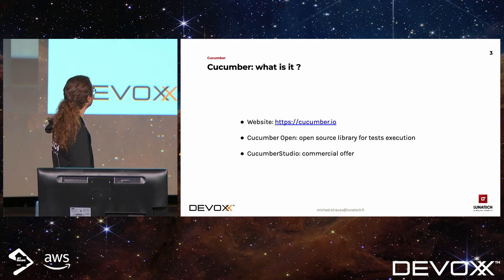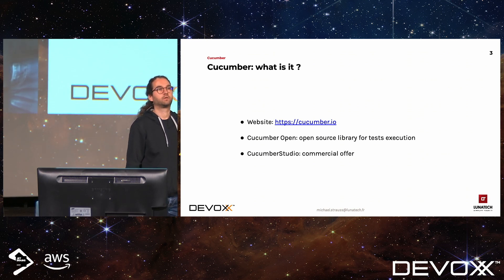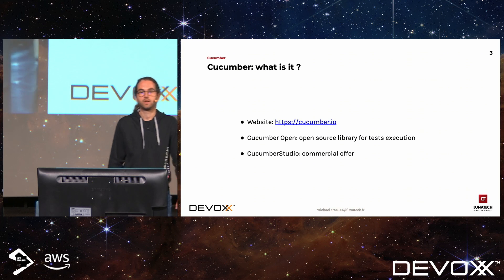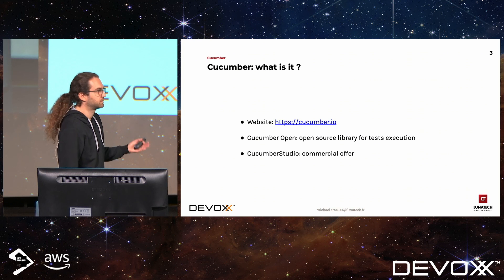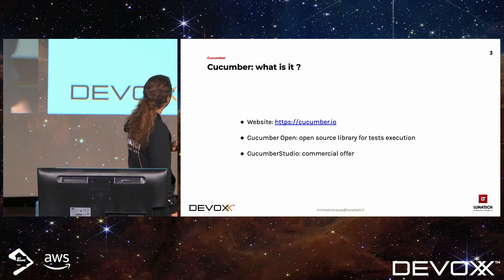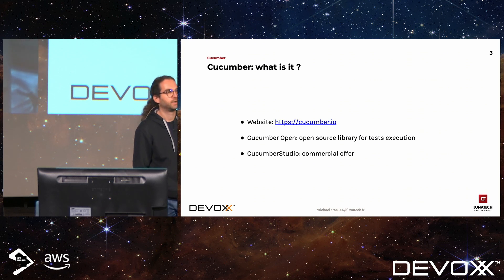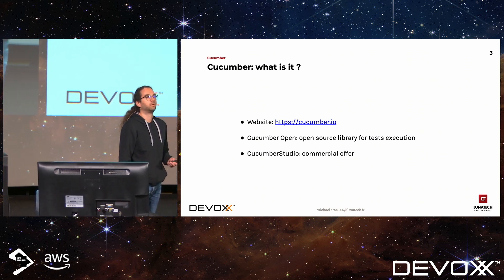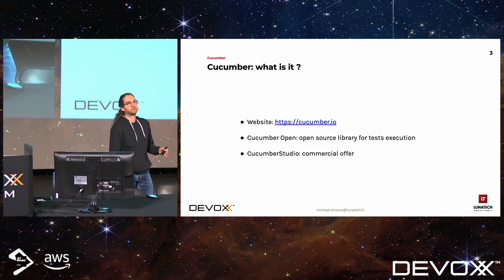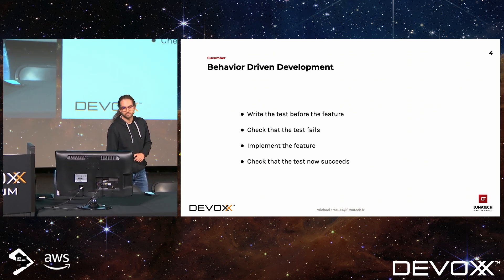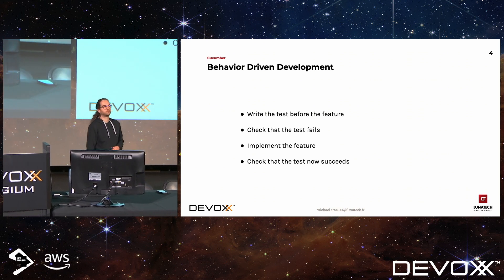So what is Cucumber? It's a testing framework that allows us to write scenarios. We can use Cucumber Open, an open source library for executing those scenarios. There is also a commercial offer, Cucumber Studio, which is a cloud repository that allows us to store and share with the customer Cucumber scenarios and execution reports. Cucumber is based on BDD, Behavioral Driven Development.